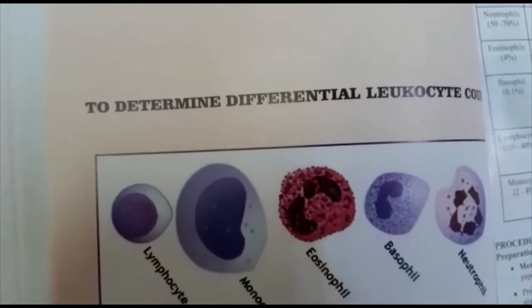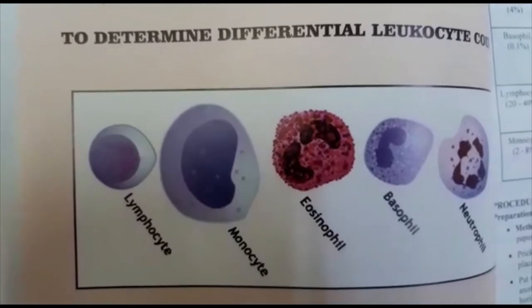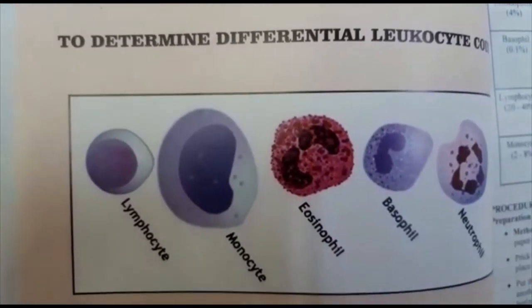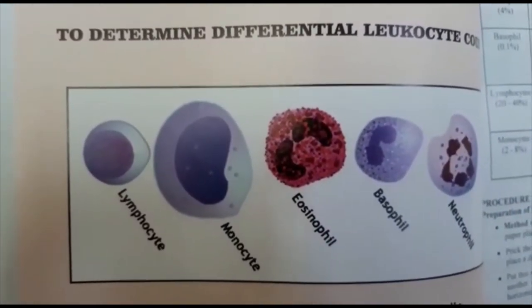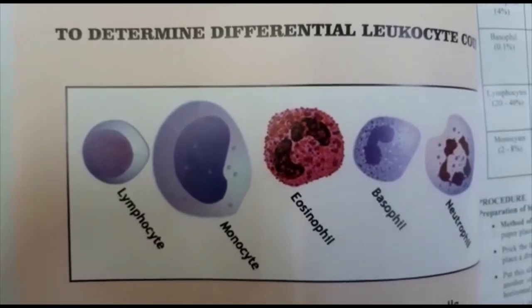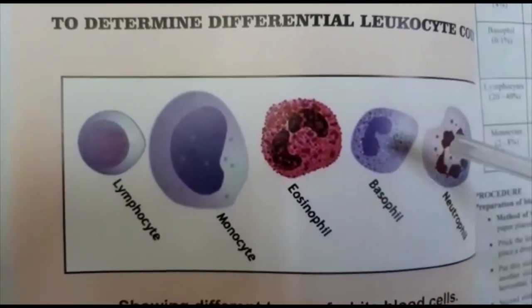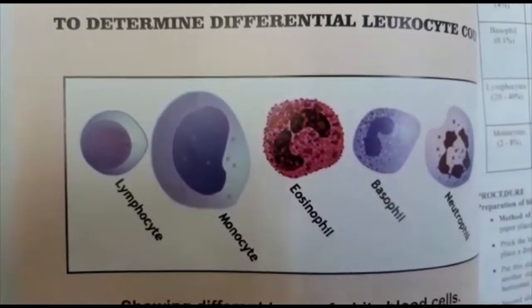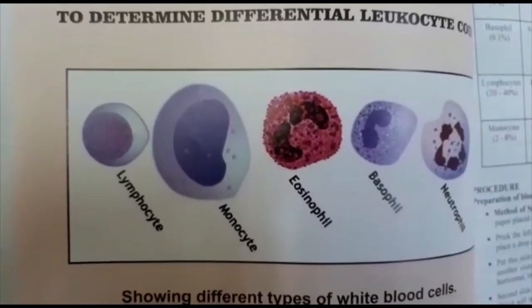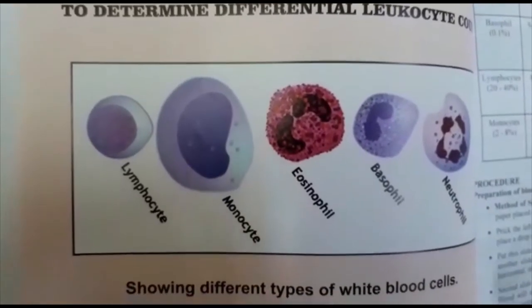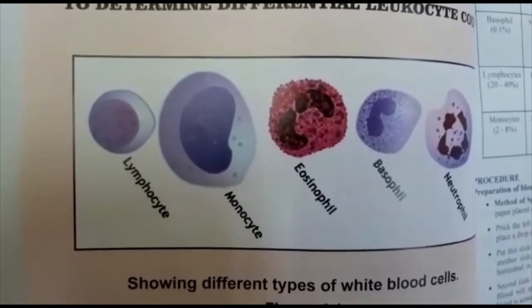Basophils are 0.1% normally and are bi-lobed. They are blue-purple in color. The nucleus is not properly visible because of the granules, which are large in number, dark blue in color, and mask the underlying nucleus. In the cytoplasm, the nucleus is almost non-visible because of the granules.